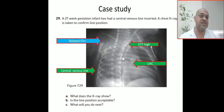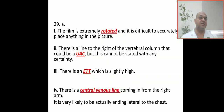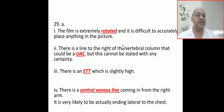Is the line position acceptable? It is not satisfactory and not acceptable. This X-ray is extremely rotated, and it is difficult to accurately assess anything in the picture. A second issue is there is a line close to the right vertebral column, which could be the UVC, and the ATT is slightly high.